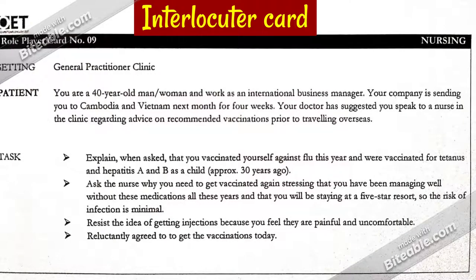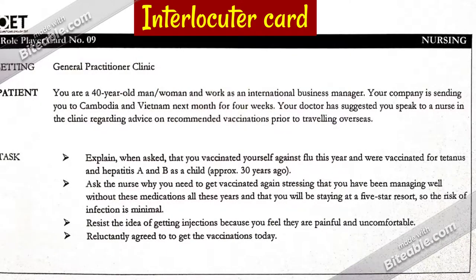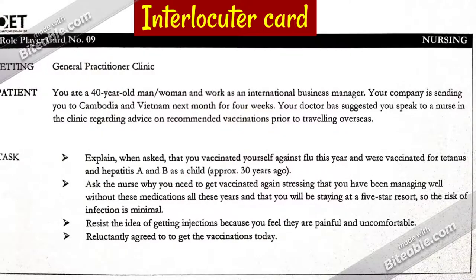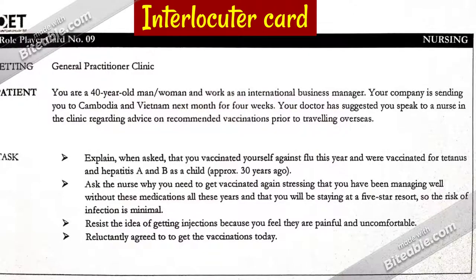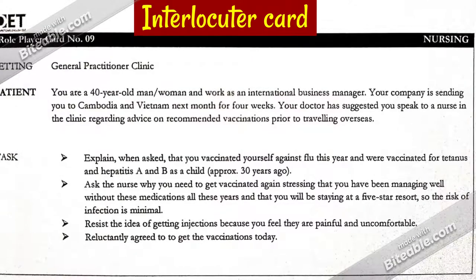When asked, explain that you vaccinated yourself against flu this year and were vaccinated for tetanus and hepatitis A and B as a child approximately 30 years ago. Ask the nurse why you need to get vaccinated again, stressing that you have been managing well without these medications all these years and that you will be staying at a five-star resort, so the risk of infection is minimal. Resist the idea of getting injections because you feel they are painful and uncomfortable, but reluctantly agree to get the vaccination today.